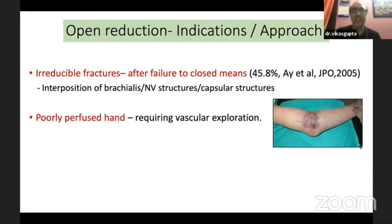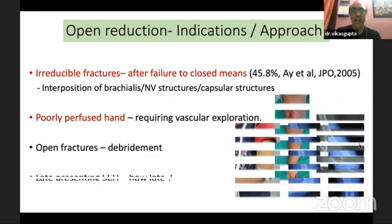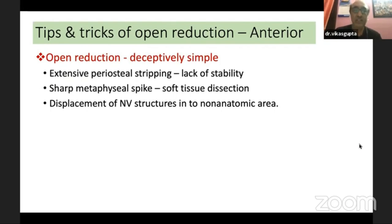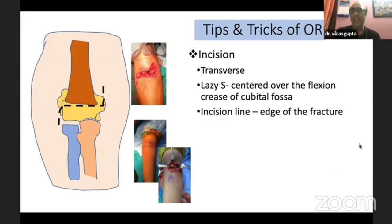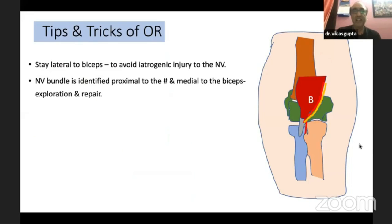Briefly on open reduction: the commonest indication remains an irreducible fracture, especially with interposition of soft tissue or a neurovascular injury. The second common indication is a poorly perfused hand requiring vascular exploration. The anterior approach is commonly used. Remember, open reduction is deceptively simple — because of extensive periosteal stripping the fractures are quite unstable. There is a sharp metaphyseal spike which can displace neurovascular structures, so you must know the neurovascular anatomy of the cubital fossa. Incision can be transverse or lazy-S; I prefer transverse, ensuring it is over the edge of the fracture, avoiding dissection through traumatized skin. Stay lateral to the biceps for irreducible fractures, but go medial to the biceps to explore the neurovascular bundle.